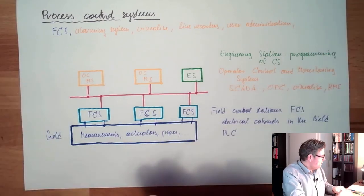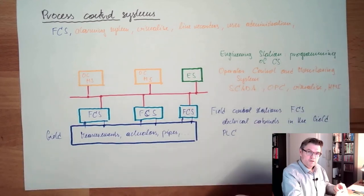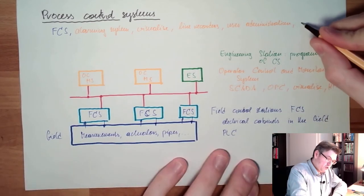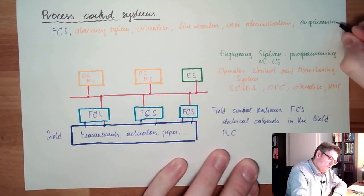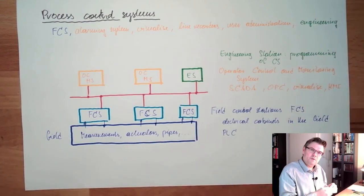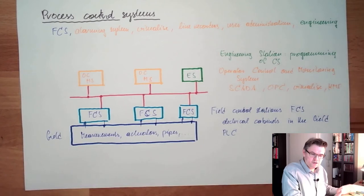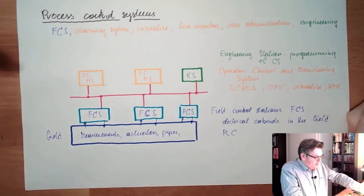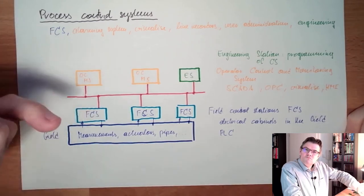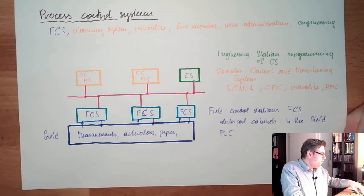And of course, one engineering station. This is also pretty much in every control system. If it's a bigger control system, you have an engineering station on site. This is the stuff which pretty much is always there.